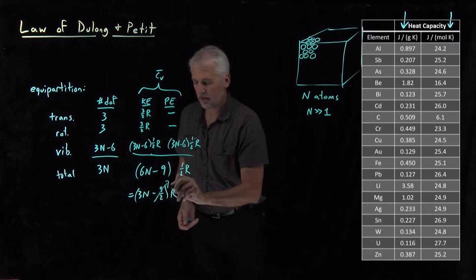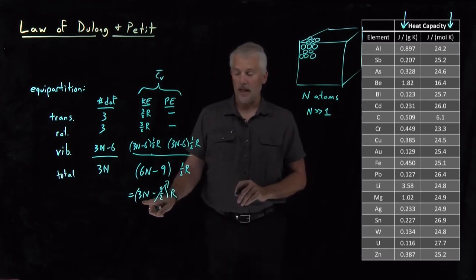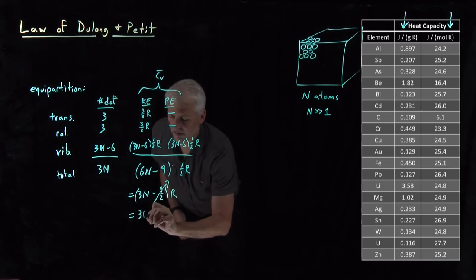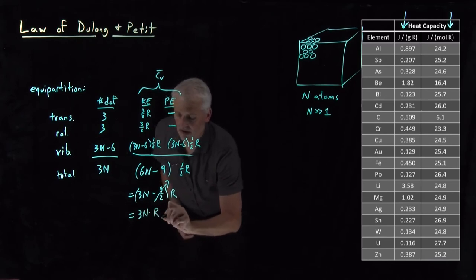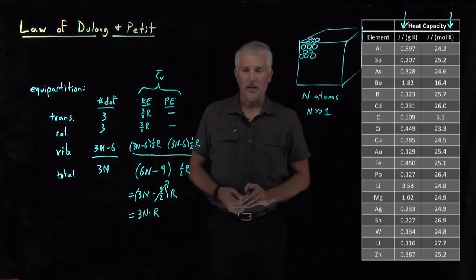So I can completely neglect that nine halves when subtracting from a very large value of N times 3. So this is equal essentially to 3N times the gas constant, or times Boltzmann's constant, if we prefer.